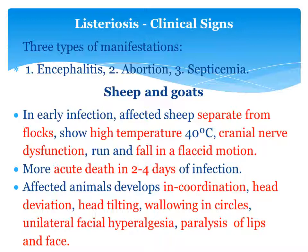Symptoms in sheep and goat: In early infection, the affected sheep separate from the flock. They remain separate because the animal is sick, with high temperature. There is cranial nerve dysfunction — because in pathogenesis, the organism ascends to cranial nerves causing dysfunction. The animal may run and fall down in a flaccid motion, meaning the animal falls loosely, not rigidly. In more acute cases, death is observed in 2 to 4 days of infection. Affected animals develop incoordination of movement.